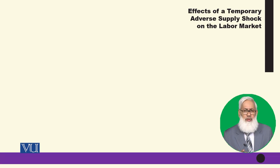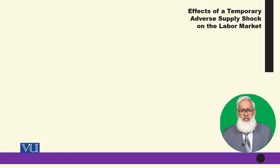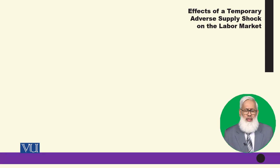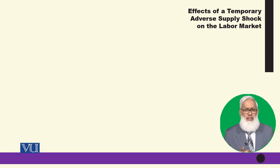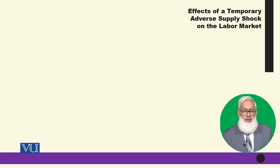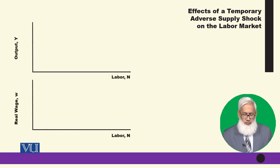If there is an adverse supply shock — an adverse supply shock is a result of bad weather, oil price increases, or any other factor — the production function shifts downward. This is the sort of adverse supply shock, and this is its impact on the labor market and output.